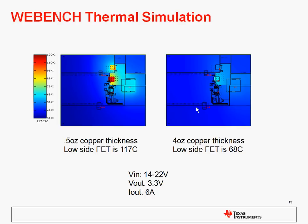These are results of two simulations on a particular device with 14 to 22 volts in, 3.3 volts out at 6 amps. With half-ounce copper, the low side FET was up to 117 degrees C. One of the things to note here is that thermal simulation allows you to see components that are close together and observe the co-heating effects, because oftentimes in a power supply design components are very close together for design and noise reasons. In this case, increasing the copper thickness to 4 ounces dropped the temperature all the way down to 68 degrees C.